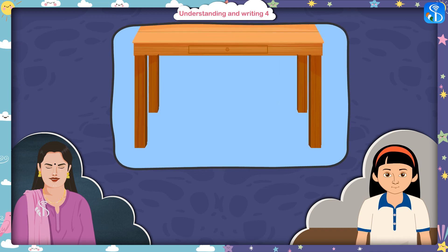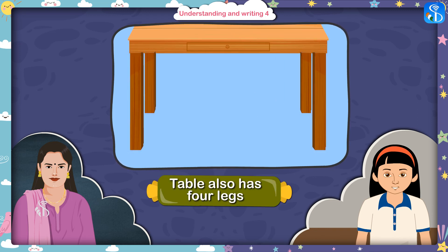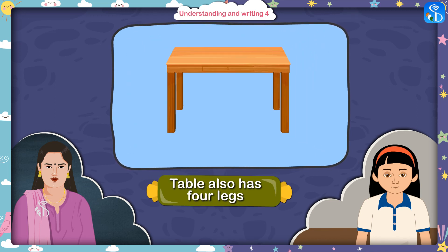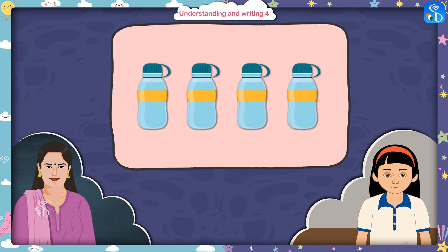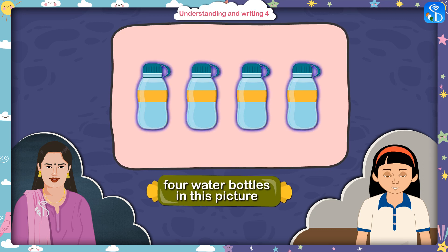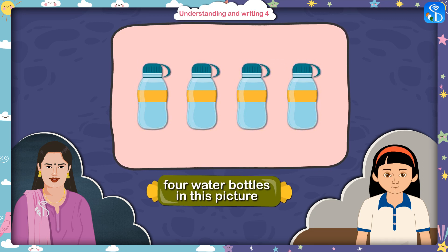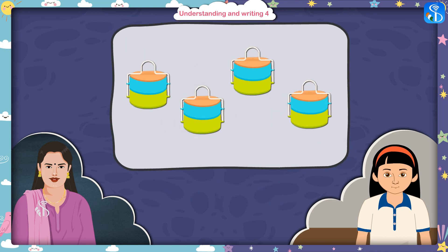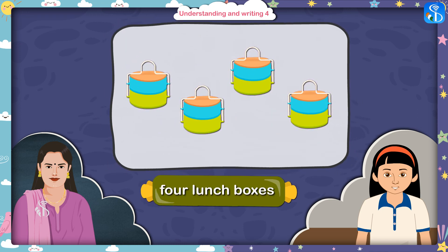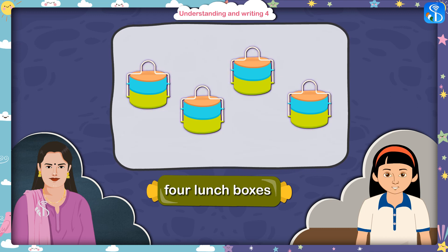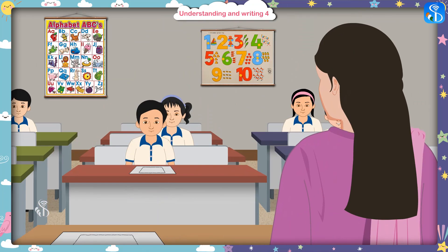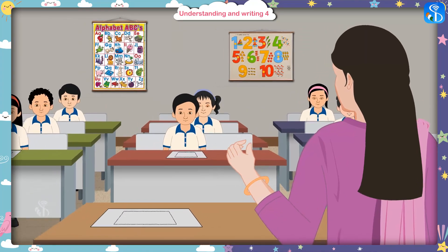Tell me, how many legs does a table have? A table also has four legs. Well said! Now look at this picture — there are four water bottles in this picture. Now tell me what do you see in this picture? There are four lunch boxes. Exactly!